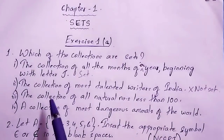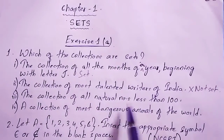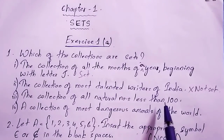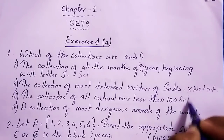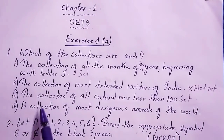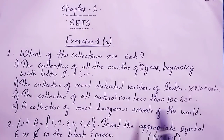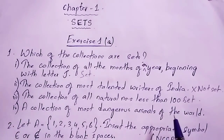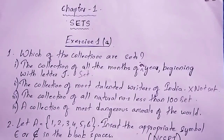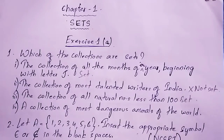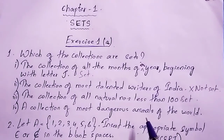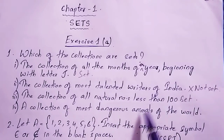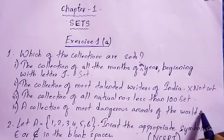The collection of all natural numbers less than 100 is fixed and well-defined, so this is also a set. Number 4, a collection of most dangerous animals of the world — this is not a set, because it depends on you. Some are scared of snakes while some are not, so this is not a well-defined collection of objects.